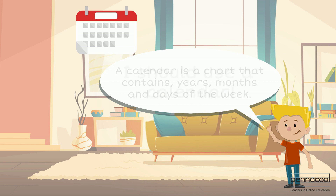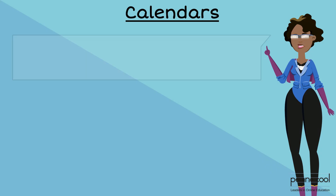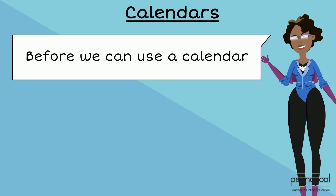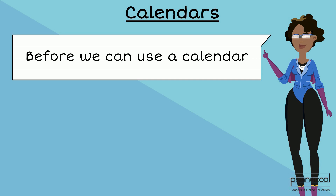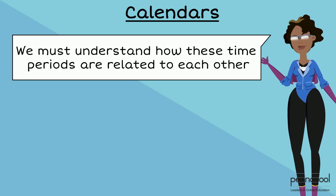A calendar is a chart that contains years, months and days of the week. Before we can use a calendar, we must understand how these time periods are related to each other.